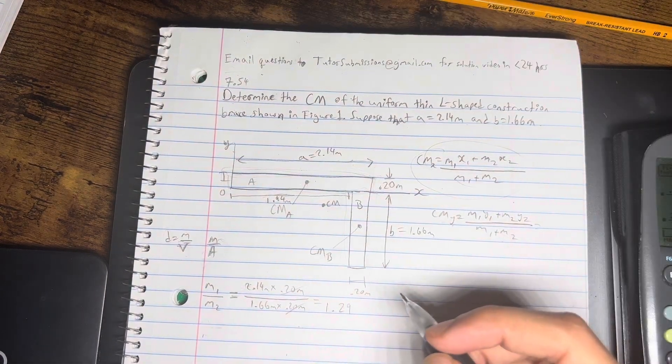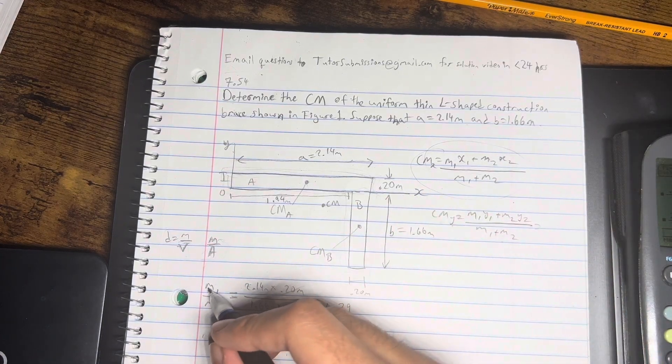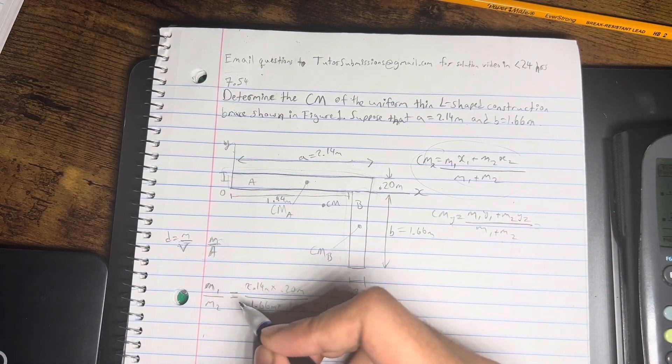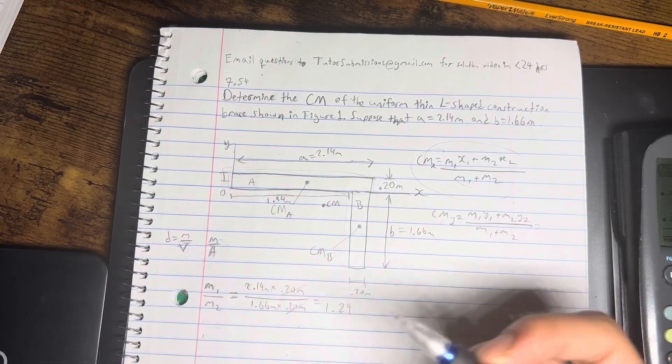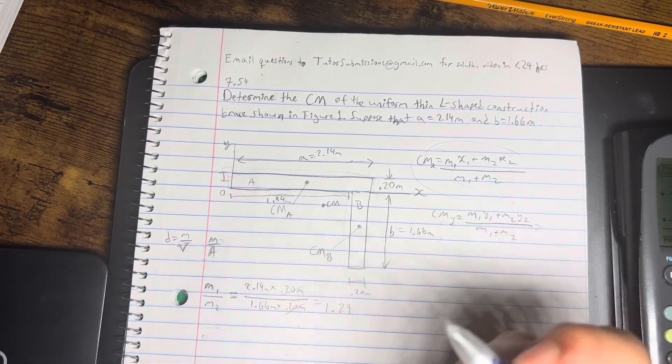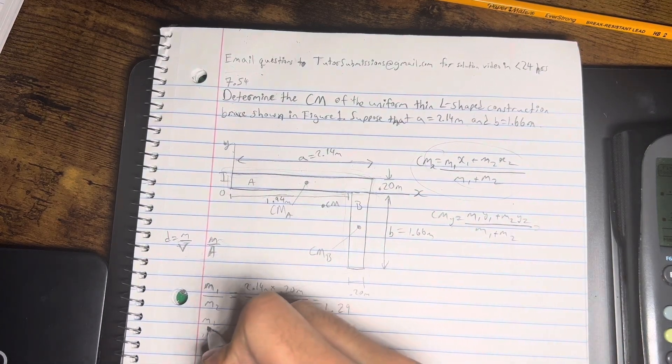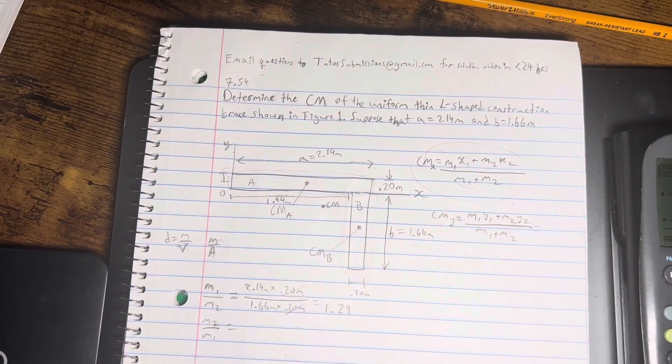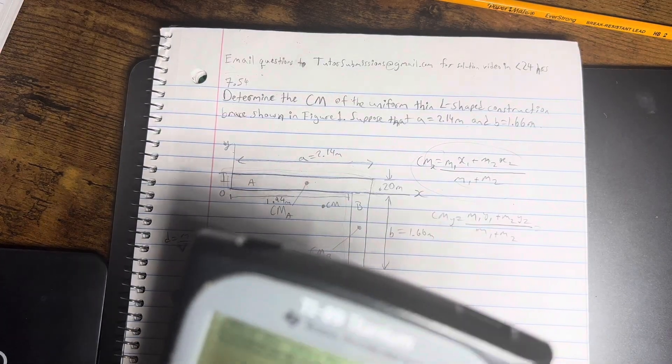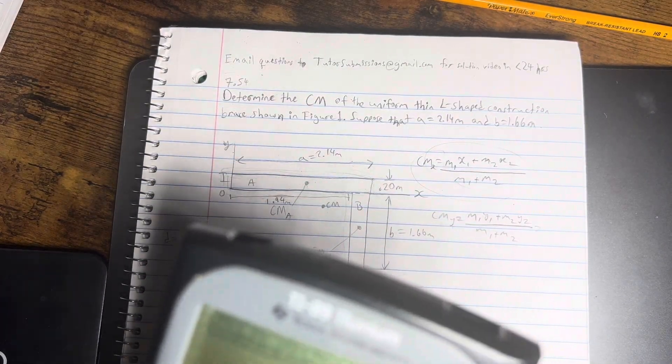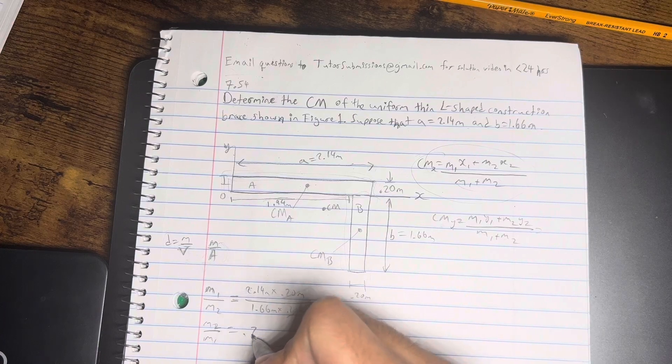Now, I just did this for the sake of showing pieces of information we can get. Now I could also flip this over, take the reciprocal and do M2 over M1, which would equal 1 divided by 1.29 which is 0.78. In case we can somehow manipulate our equation to give us something that's like M2 over M1.